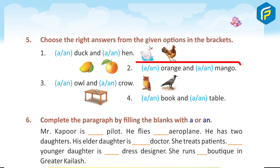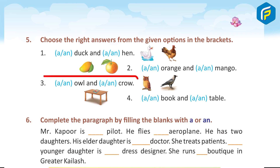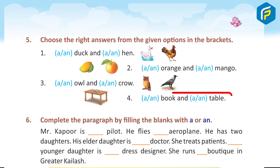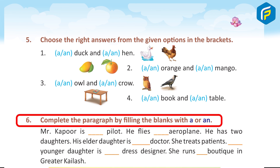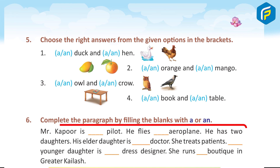2) An orange and a mango. 3) An owl and a crow. 4) A book and a table. Six: Complete the paragraph by filling in the blanks with 'a' or 'an'.